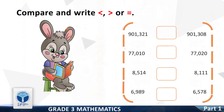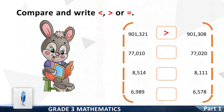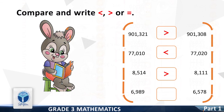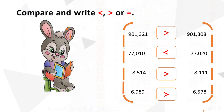Next: 1,321 vs 9,1308 — greater than. Next: 77,010 vs 7,020 — less than. Next: 8,514 vs 8,1111 — greater than. Next: 6,989 vs 6,578 — greater than. Again, you have done a great job.